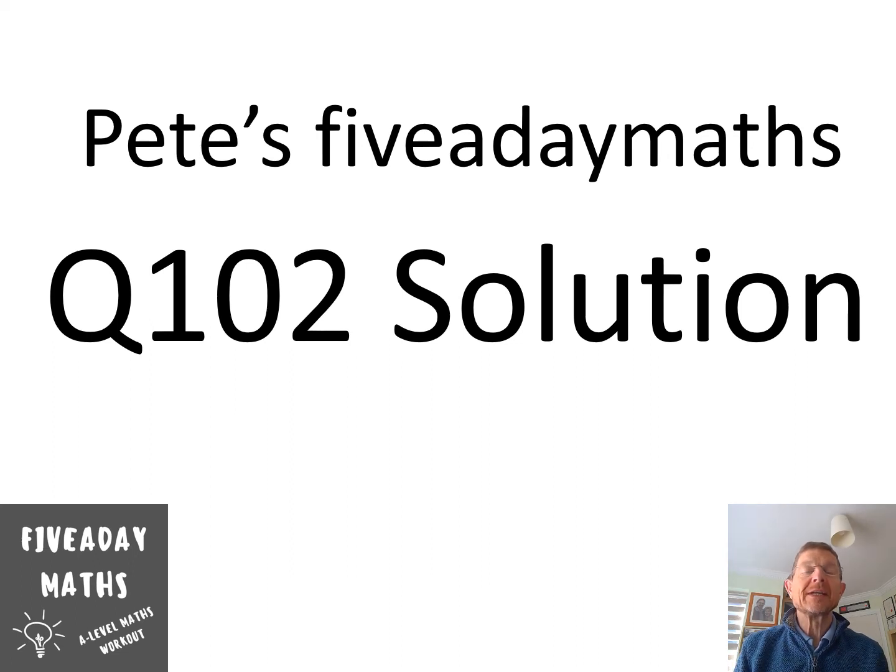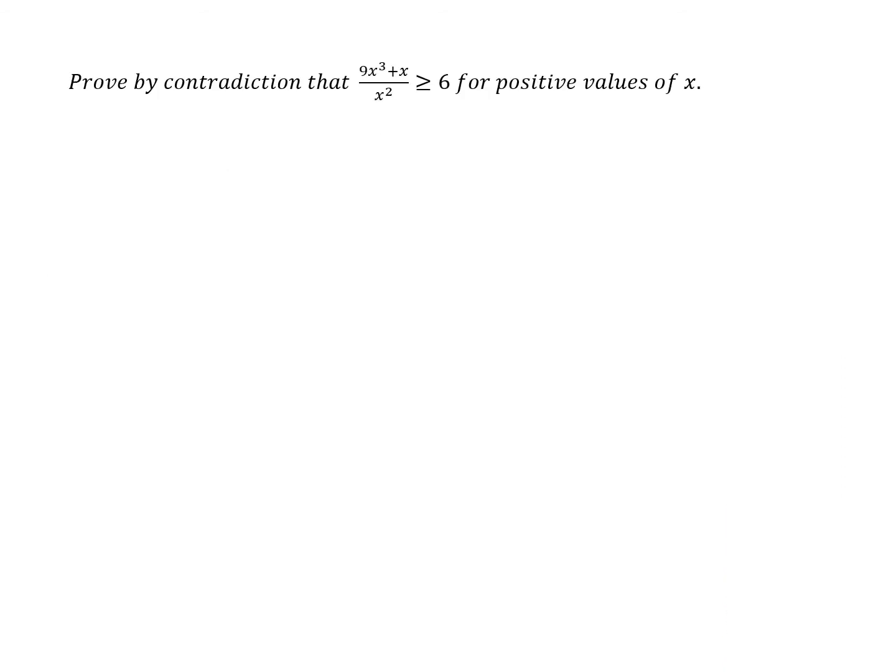So here we go, a question on proof. Now proof by contradiction. The important first step in proof by contradiction is to make the assumption that the opposite is true. So in this case we're assuming that the expression there is less than 6 for positive values of x.